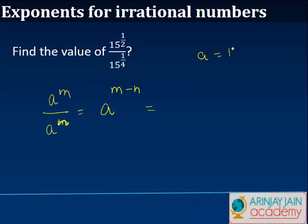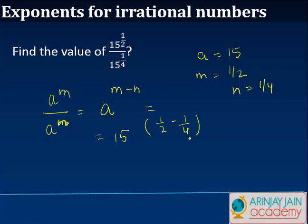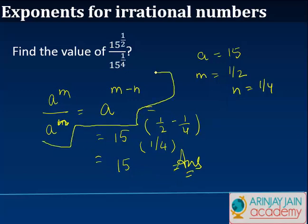Here, a being equal to 15, m being 1 by 2 and n equals to 1 by 4. So, we can write this as 15 to the power 1 by 2 minus 1 by 4, which will give you 1 by 4 itself. And this basically becomes your answer. Here we use the law of exponents to resolve a particular problem.